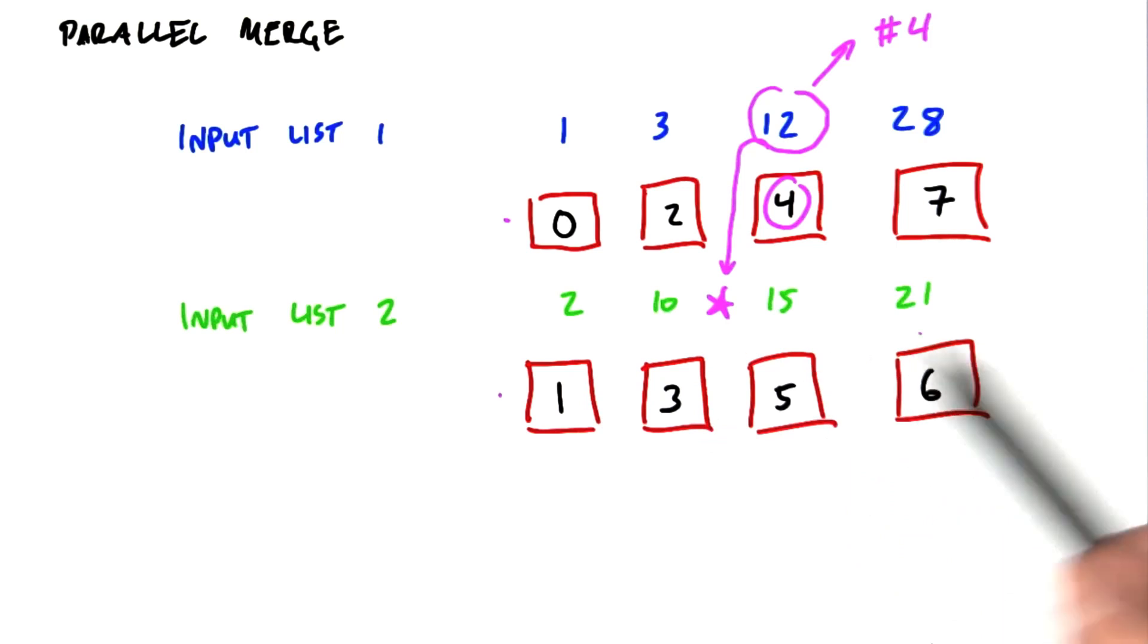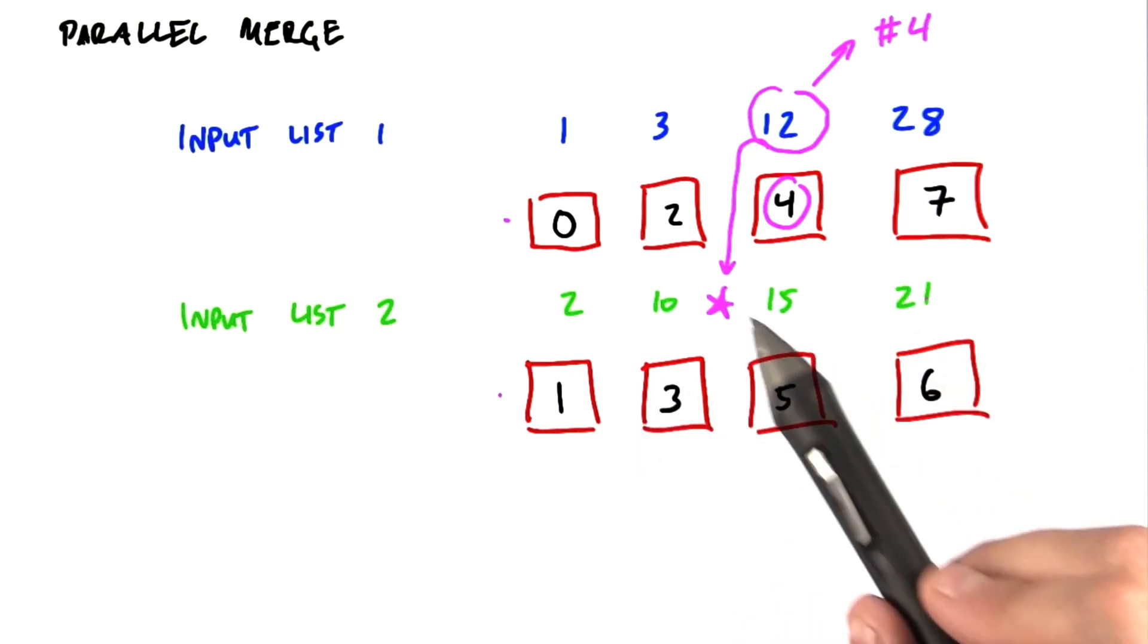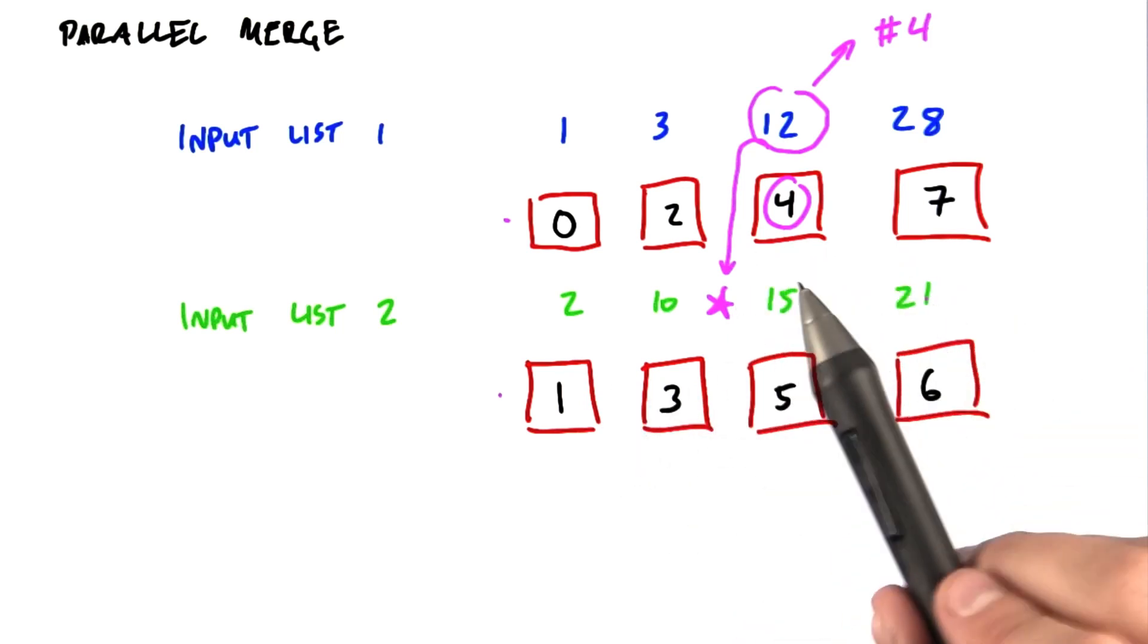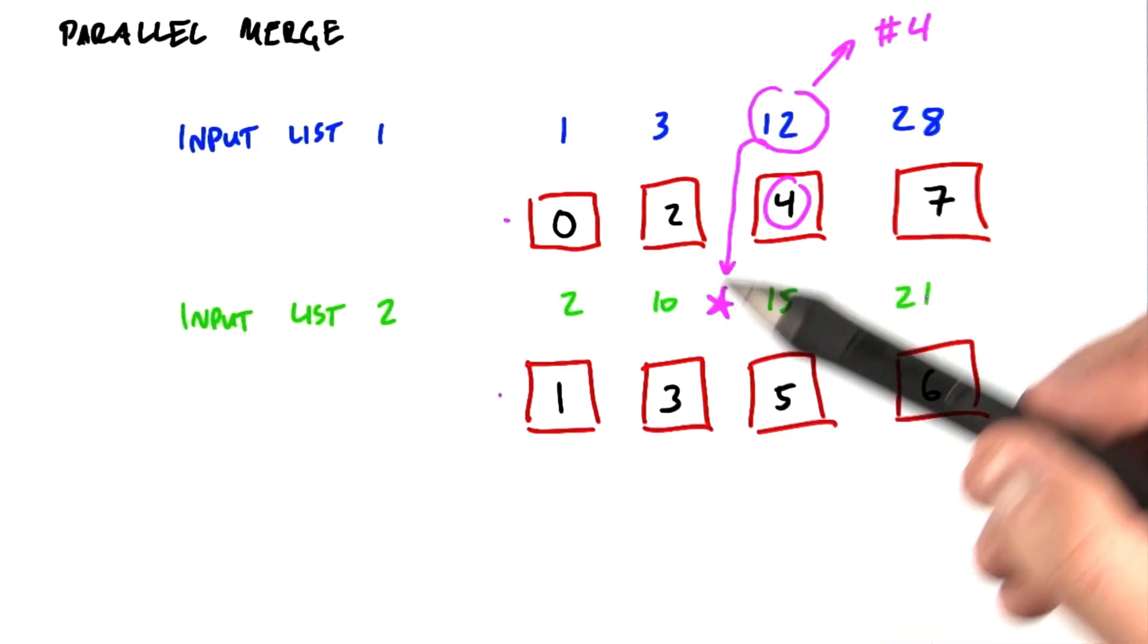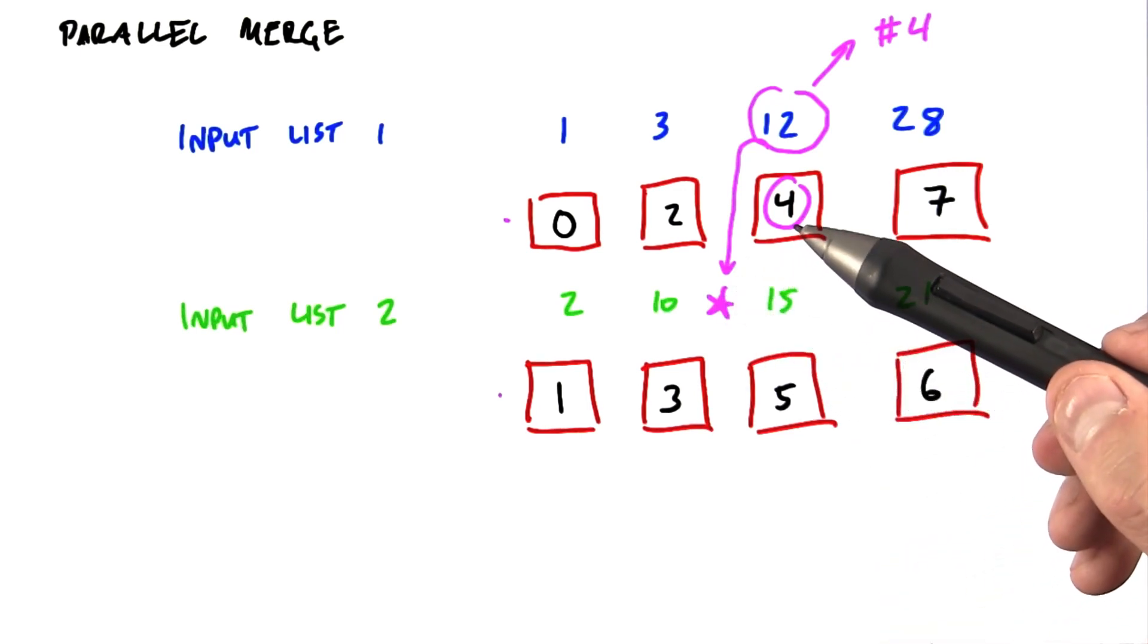Every thread does an independent binary search in parallel in the other list. So for a sorted list of length n, that will take log n steps per element, and all of those elements will do the search in parallel. And that's a very fast operation if we're doing it out of shared memory.